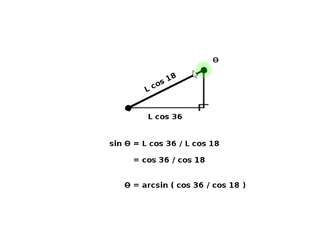Now, in order to figure out the numerical value of this angle, we need to employ the arcsine function. So theta will equal arcsine cosine 36 over cosine 18.